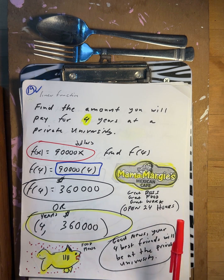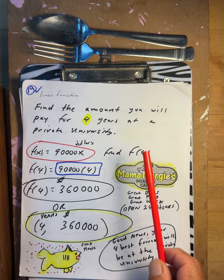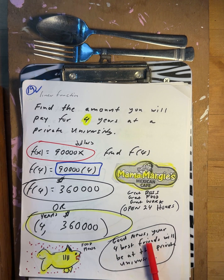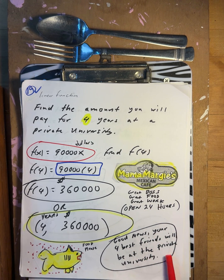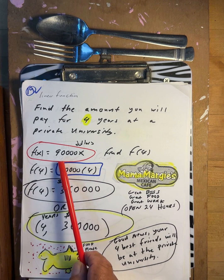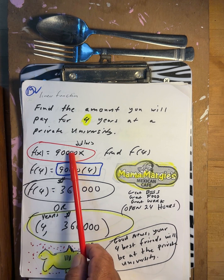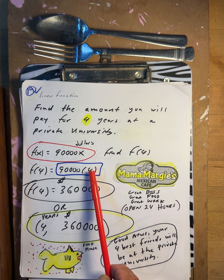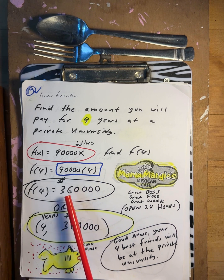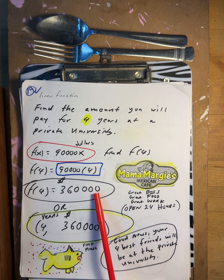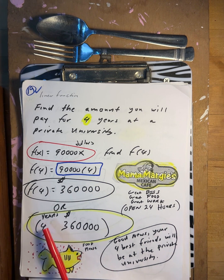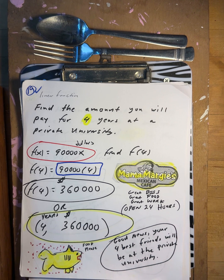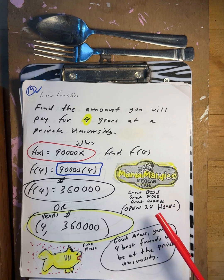Find the total amount you will pay for four years at a private university. Each year costs $90,000, and you're going four years. 4 times $90,000 is $360,000. Four years at a private university will cost $360,000.